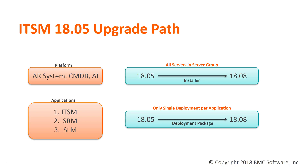To perform the upgrade, the platform components would be upgraded using the installer to 1808. All servers in the server group need to be upgraded. Once this is completed, the applications are upgraded using the deployment packages provided for 1808. They are done in the order of ITSM first, then SRM, and then SLM. These are done only once and will be applied to all servers in the server group.